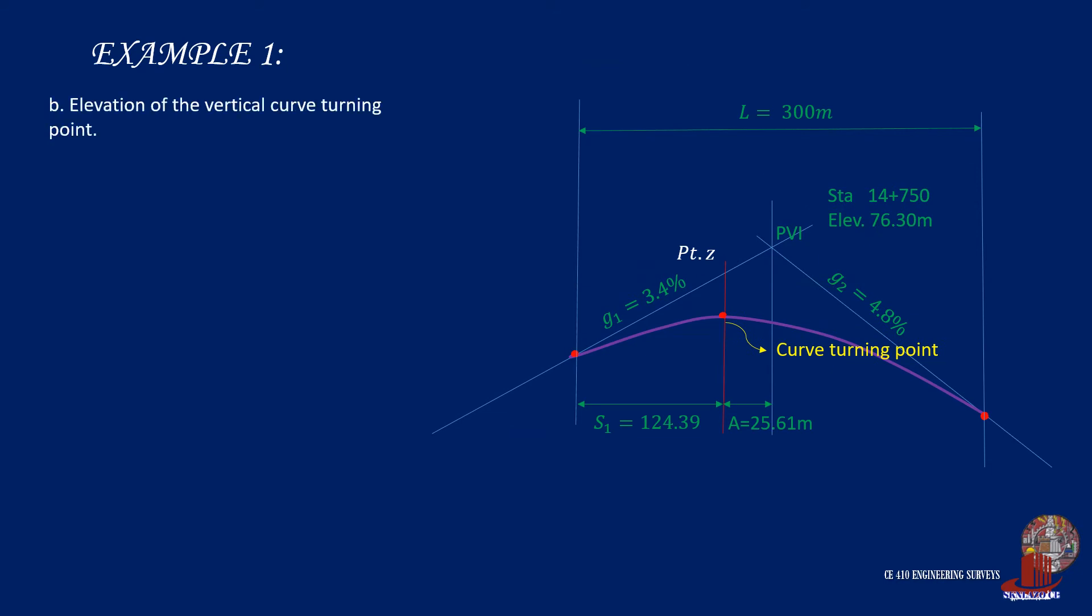Requirement B is the elevation of the summit. The elevation of any point on the curve can be computed through ratio and proportion from the external distance H, and this is computed as L over 8 times the quantity of g1 minus g2. So placing all the given values of L in the grades, H is solved as 3.075 meters.